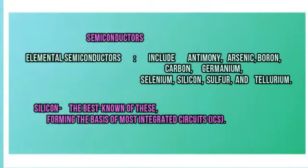Elemental semiconductors include antimony, arsenic, boron, carbon, germanium, selenium, silicon, sulfur, and tellurium. Silicon is the best known of these, forming the basis of most integrated circuits, or ICs.